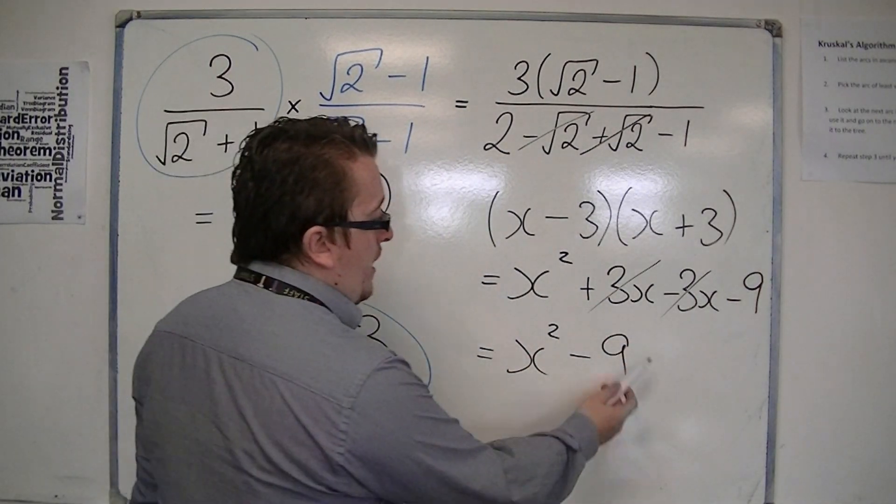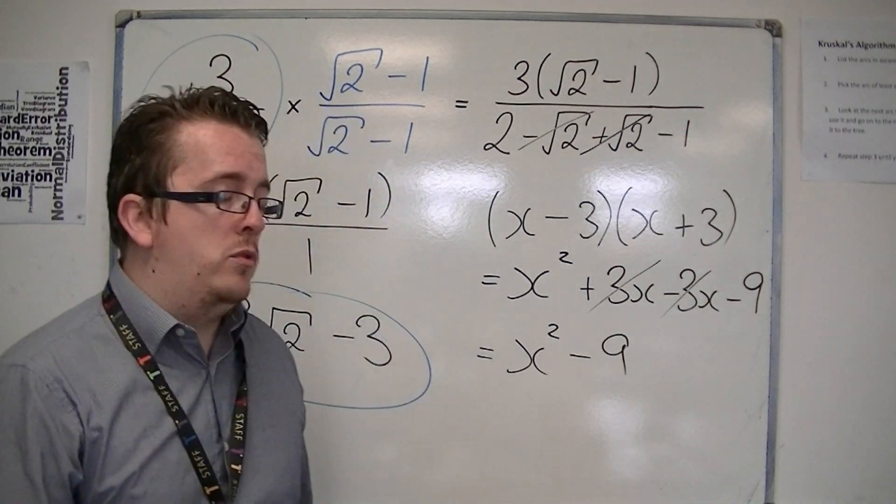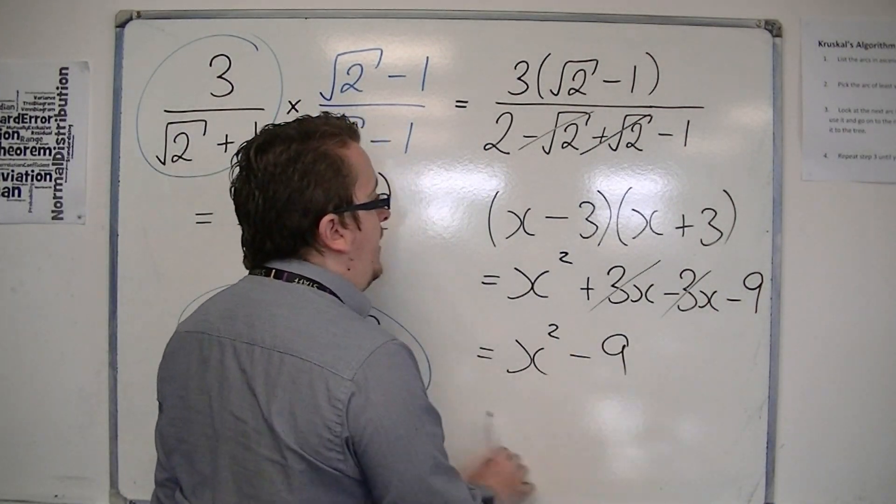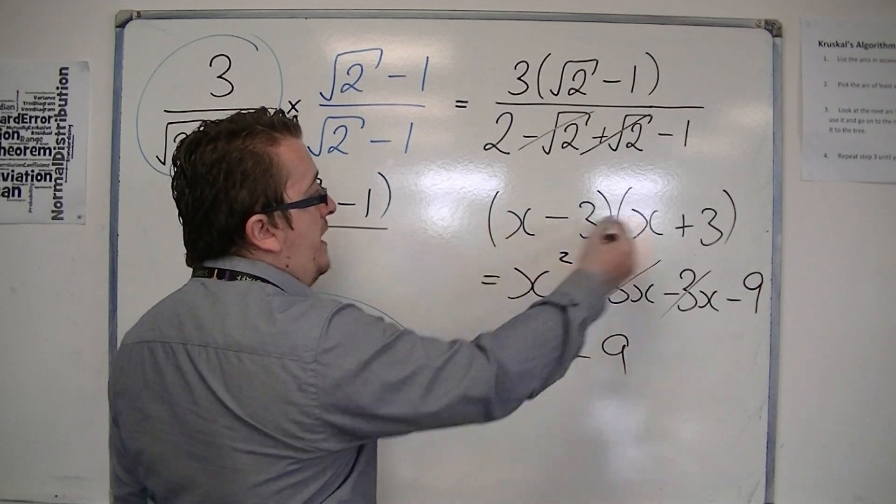This is why, when you're given x squared minus 9 and you're asked to factorize it, you should know that this is the difference of two squares, and are able to immediately go to these two brackets.